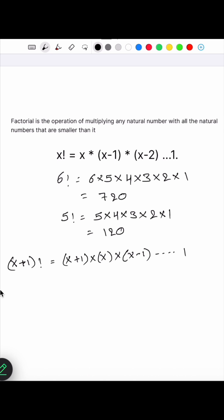In the modified formula, this term we can write as x factorial. So x plus 1 factorial is equal to x plus 1 multiplied by x factorial.